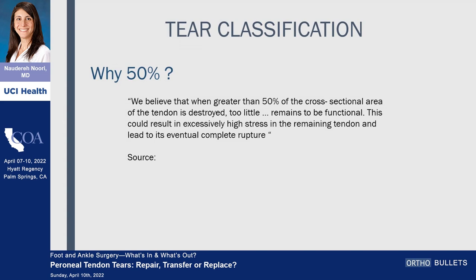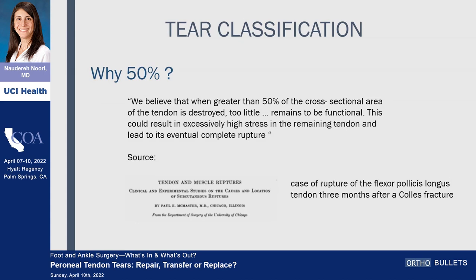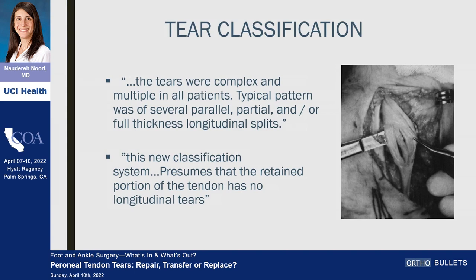But why 50%? Where did this come from? They stated: 'We believe that when greater than 50% of the cross-sectional area of the tendon is destroyed, too little remains to be functional. This could result in excessively high stress in the remaining tendon and lead to its eventual complete rupture.' The source cited was a 1933 JBJS paper — a case report of rupture of the flexor pollicis longus tendon three months after a Colles' fracture. Additionally, they admitted their own limitations — tears were complex and multiple in all patients, typically several parallel partial and/or full-thickness longitudinal splits, and that this classification presumes the retained portion has no longitudinal tears. So if this doesn't apply to the majority of tears we're seeing, what are we supposed to do?